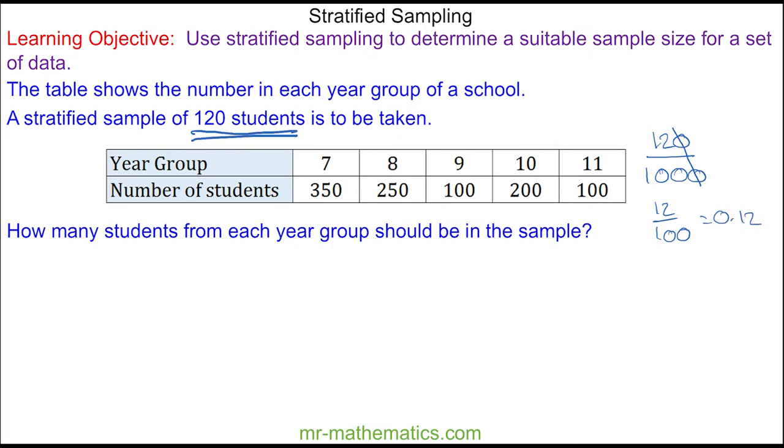So this is our proportion of each year group. To work out the sample of year 7 students, we have the proportion 0.12 multiplied by the frequency of year 7, which is 350, which gives us 42 students. For year 8, 0.12 multiplied by 250, and this is 30 students.